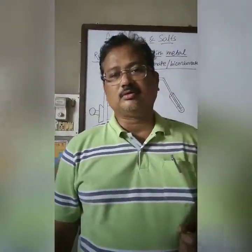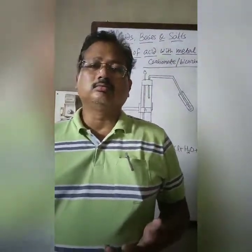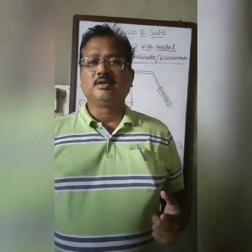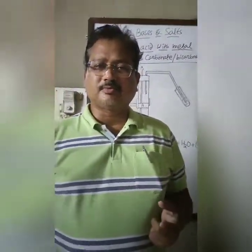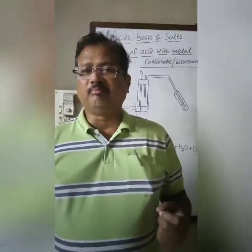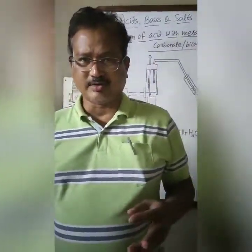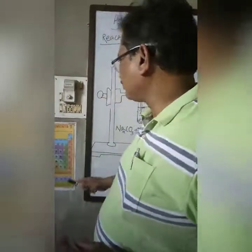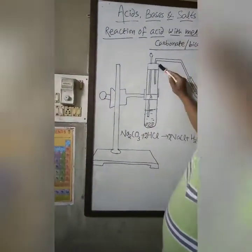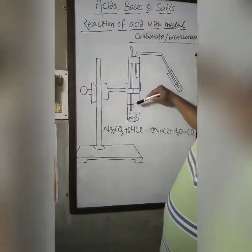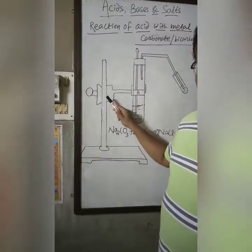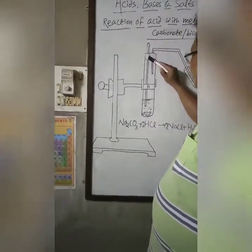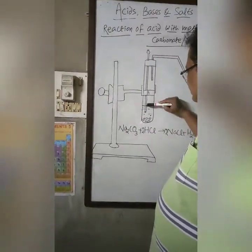Hello students. In this video we are going to discuss another property of acid: the reaction of dilute acid with metal carbonate or bicarbonate. As you can see in the figure, here is a test tube fixed in a stand and the thistle funnel is immersed in it.